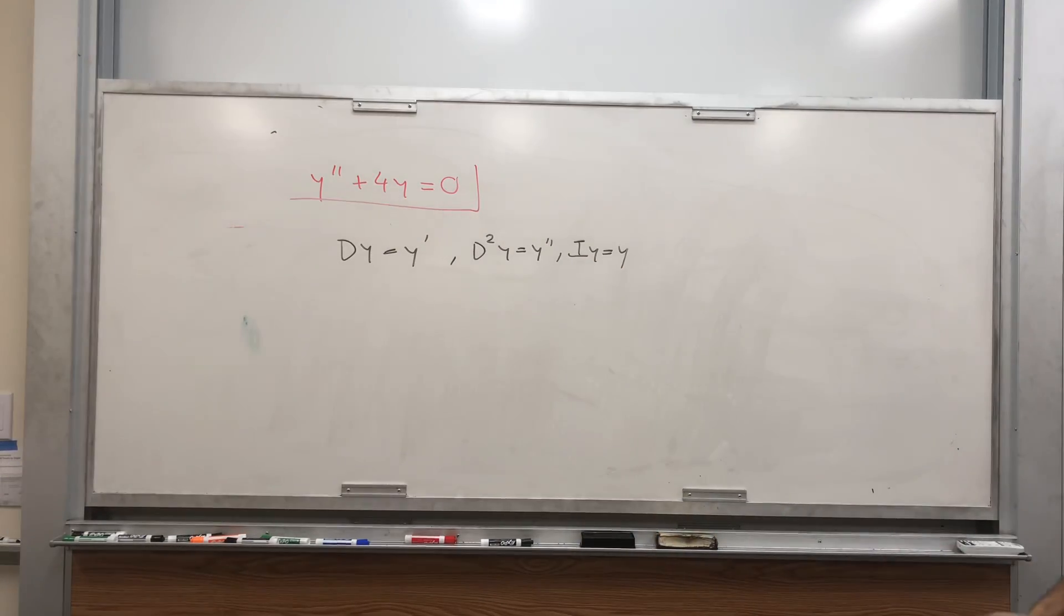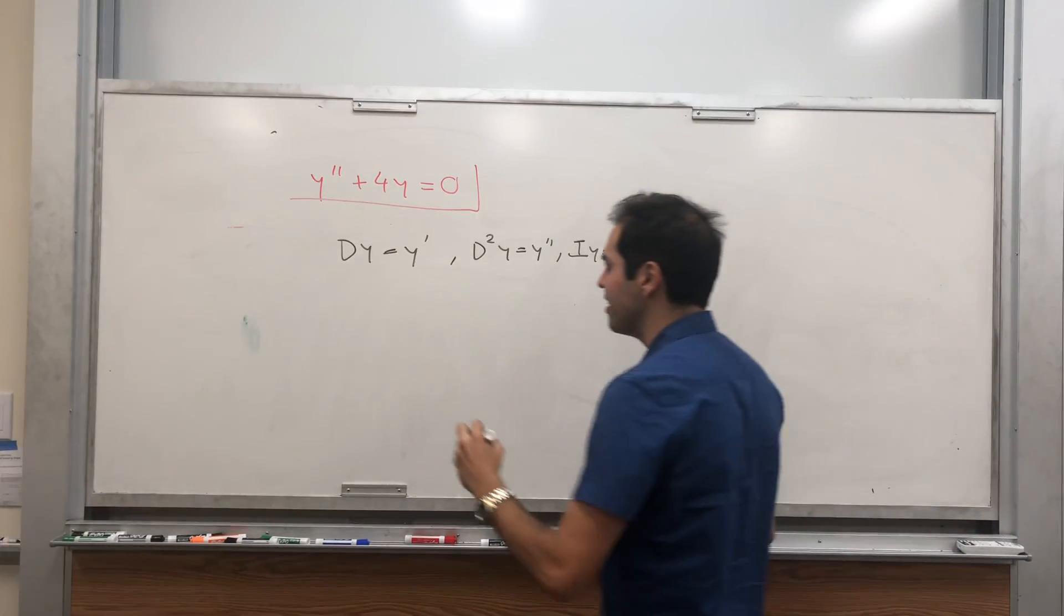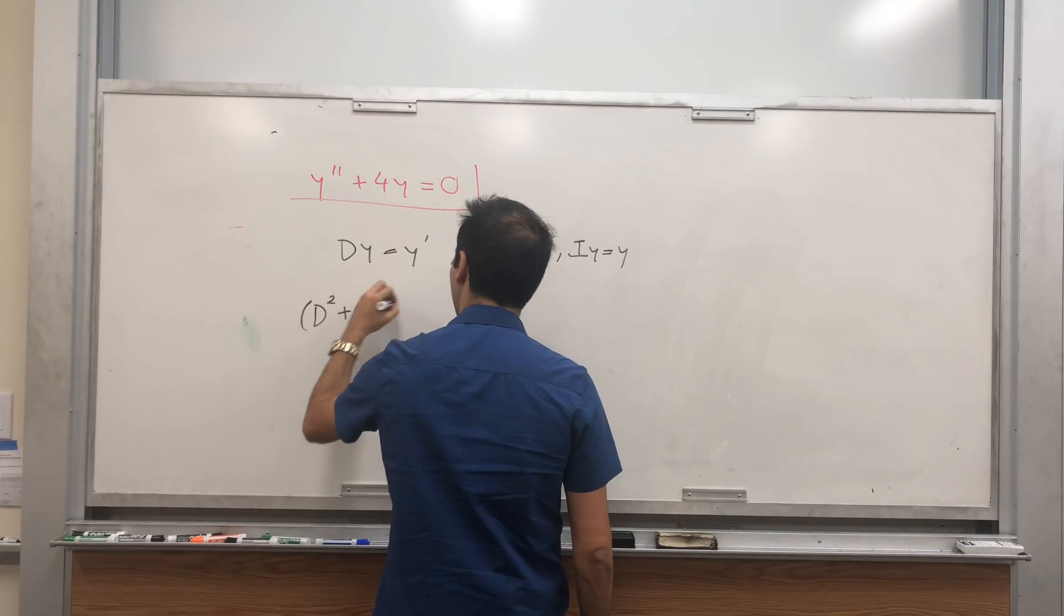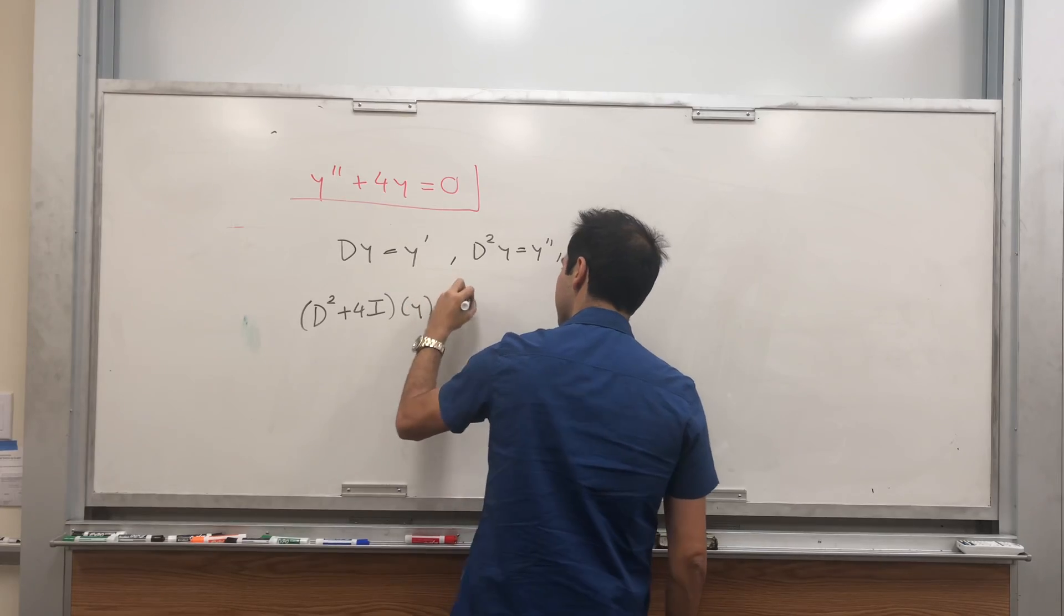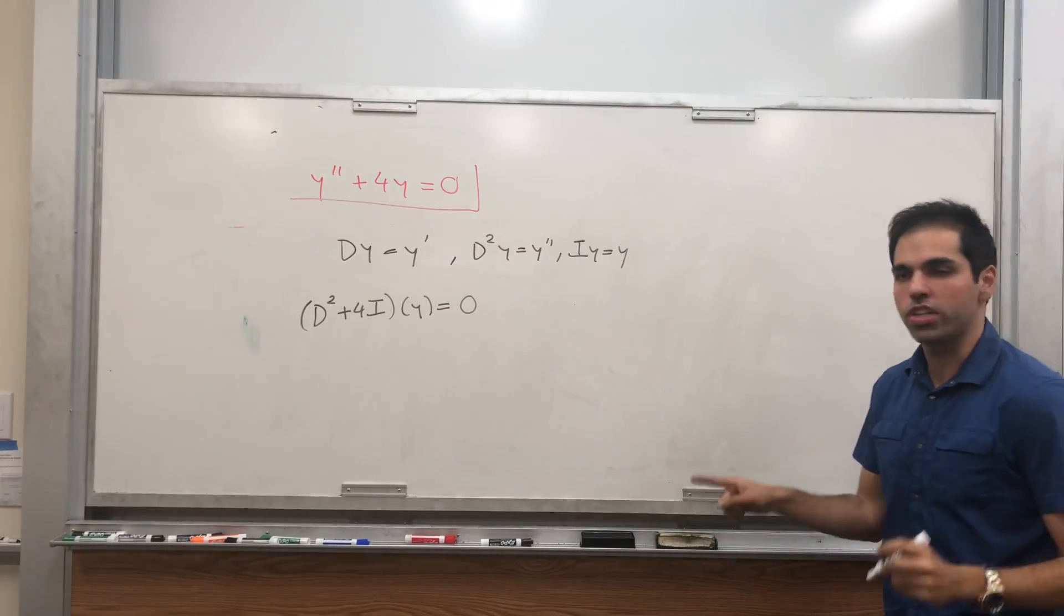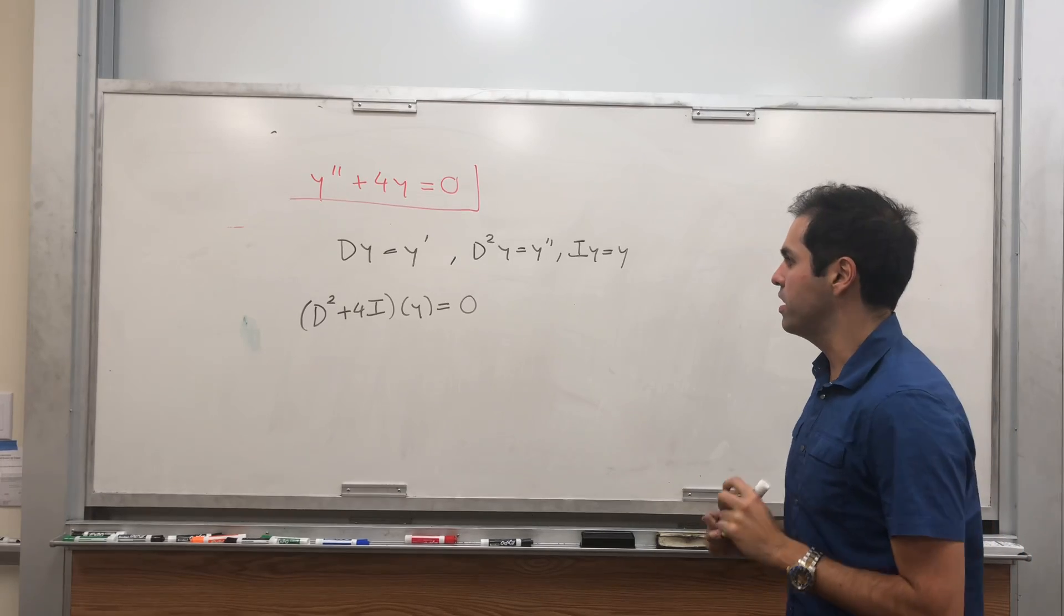In particular, this differential equation you can write in terms of differential operators, so D squared plus 4I, y equals zero. And I'd like to remind you, y is a real solution. This will be very important in the end.